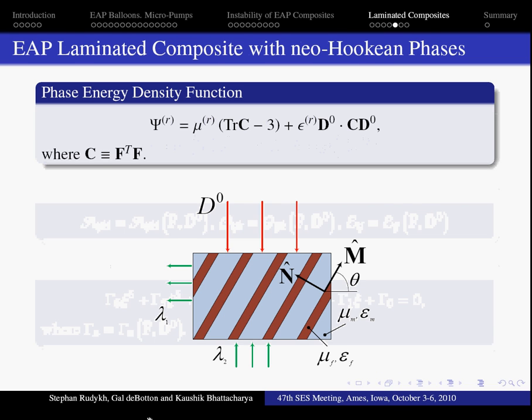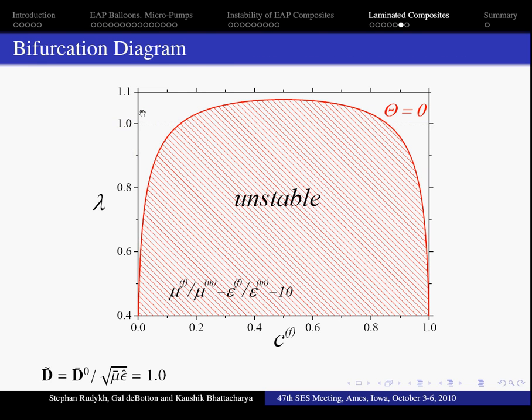For example, we assume that phases of the laminate are Neokin materials and their behavior can be defined by the energy density function. And here is the plot of the unstable domain in the coordinates of inclusion volume fraction C^f and stretch λ.